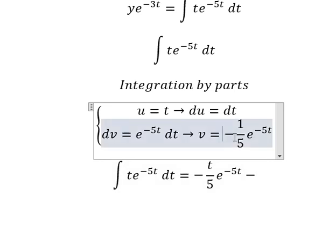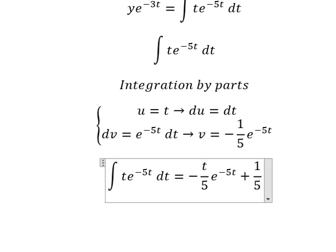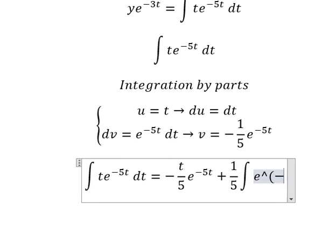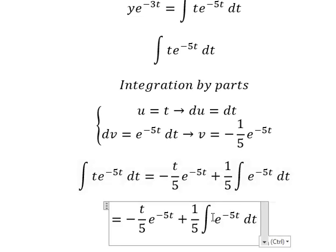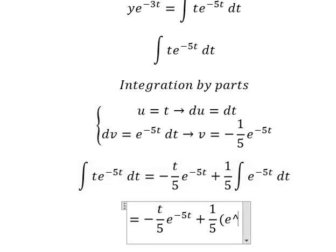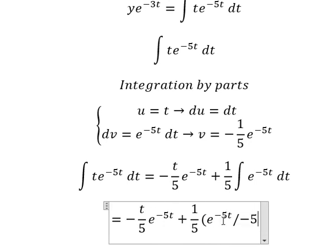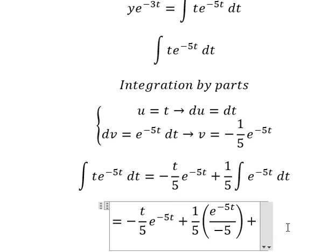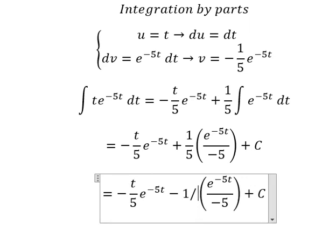We have u multiplied by v, minus the integral of du multiplied by v. That gives us negative 1 over 5 — and negative times negative gives us positive — so we have the integral of e to the power of negative 5t dt. The integral of that is e to the power of negative 5t over negative 5, and then we add the constant c. So 5 times negative 5 gives us negative 1 over 25.